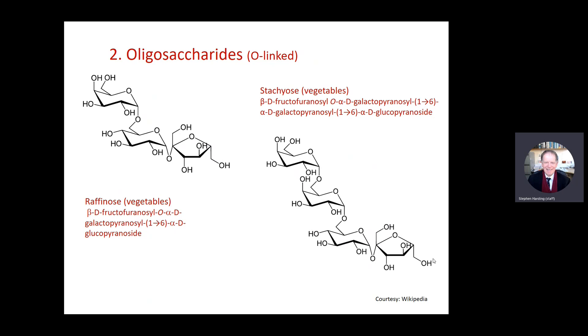Stachios which is a tetrasaccharide for monosaccharide units. So you've got your fructose residue here linked to galactose and then a 1,6 link to another galactose residue and a 1,6 link to a glucose residue. So you've got three glycosidic bonds in this glycan.